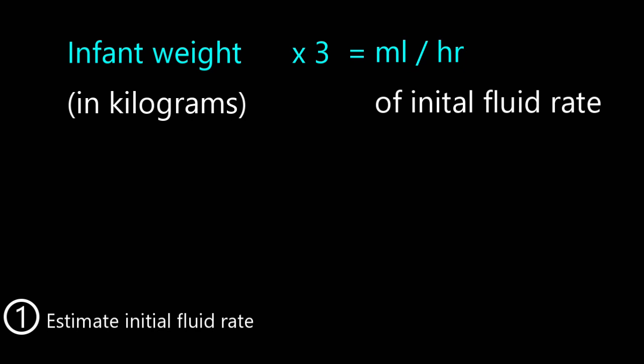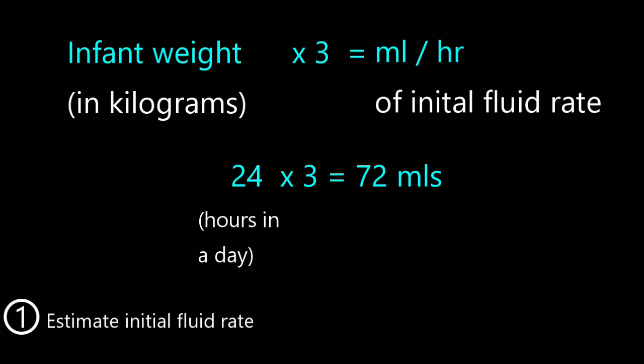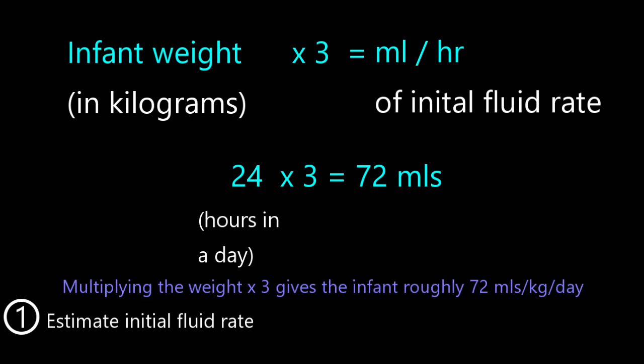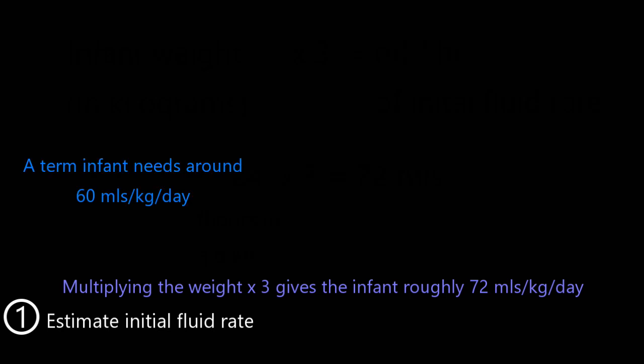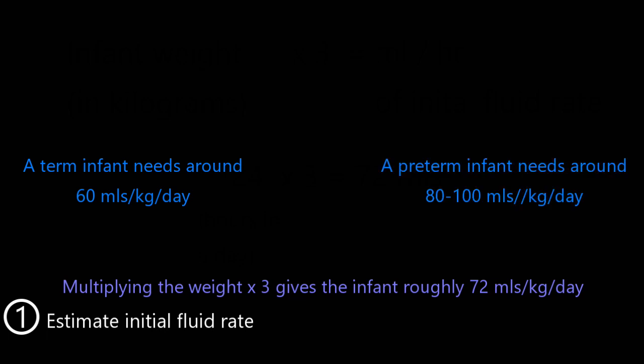The reason this works is that 24 hours times 3 equals 72 mL. So multiplying weight by three gives roughly 72 mL per kilo per day. A term baby generally needs a little less — closer to 60 mL per kilo per day — so you can round down. A preemie baby often needs more than 72, kind of 80 or even 100 cc per kilo per day, so you can round up or add a little bit extra.